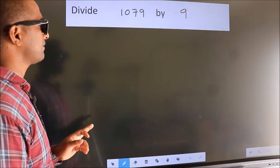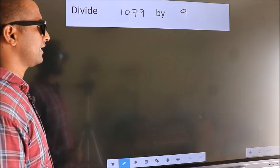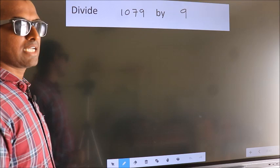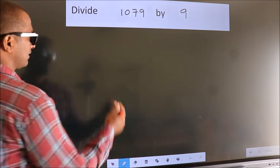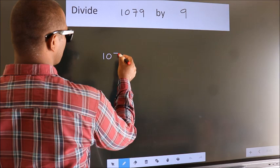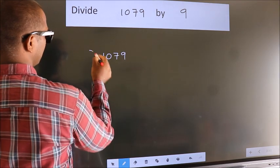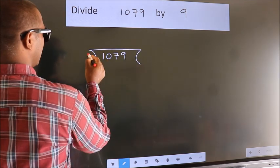Divide 1079 by 9. To do this division, we should frame it in this way. 1079 here, 9 here.